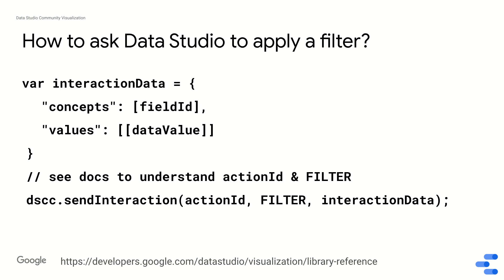To ask Data Studio to apply a filter, you need to understand this code. There's an interaction data object, and then you call DSCC — which is the helper library we've built — dot sendInteraction, passing the action ID, filter, and interaction data. I'll leave you to review the documentation to understand action ID and filter, but I want to spend some time on interaction data because those are the parameters that dictate how Data Studio will filter the rest of your dashboard.